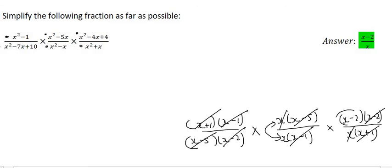So all that we have left over at the top is x minus 2, and all that we have left over at the bottom is x. And so the final answer is x minus 2 over x. Remember, we can't cancel these because it's two terms at the top and one term at the bottom.